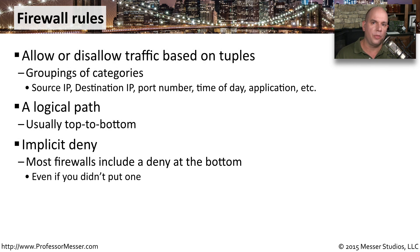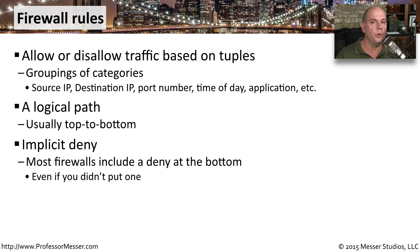If we go all the way through the list on the firewall and never match any of the rules inside, most firewalls are configured with something called an implicit deny. That means if there's not a specific rule that allows that traffic through the firewall, it's going to be always denied once it goes through the entire evaluation list.